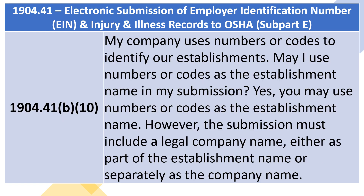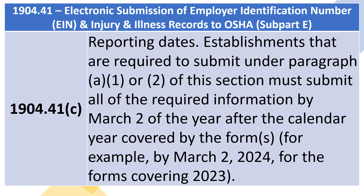1904.41(b)(10): My company uses numbers or codes to identify our establishments. May I use numbers or codes as the establishment name in my submission? Yes, you may use numbers or codes as the establishment name. However, the submission must include a legal company name, either as part of the establishment name or separately as the company name. 1904.41(c) Reporting Dates: Establishments required to submit under Paragraph A.1 or A.2 must submit all required information by March 2 of the year after the calendar year covered by the forms — for example, by March 2, 2024, for the forms covering 2023.